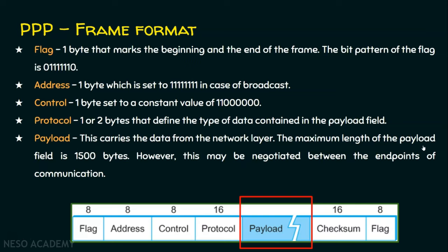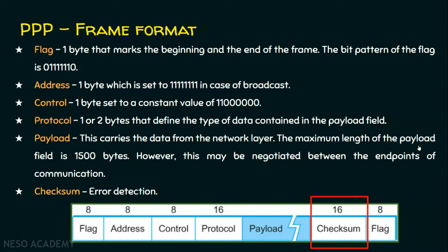The maximum length of the payload is 1500 bytes; however, this may be negotiated between the endpoints of the communication — for example, between two routers in a WAN. Finally, there is the checksum field of 16 bits, or two bytes. Unlike the bit-oriented HDLC protocol and Bysync, which both use CRC as the error detection technique, PPP uses the checksum, also known as the Internet checksum. Error detection techniques including LRC, VRC, Internet checksum, and CRC will be covered in the error detection lectures.